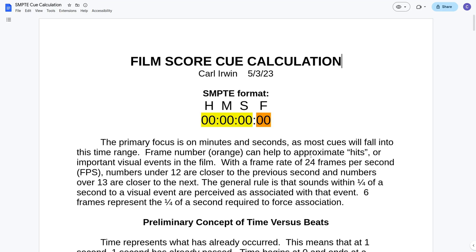Frame rate is dealing with the number of frames per second. We are focusing mostly on the minutes and seconds as most cues will fall into this time range. Frame number, which is the orange over here, can help to approximate hits or important visual events in the film. With a frame rate of 24 frames per second, numbers under 12 are closer to the previous second and numbers over 13 are closer to the next second.